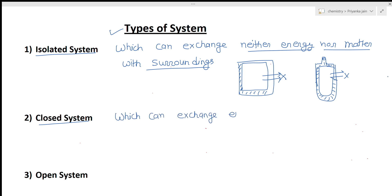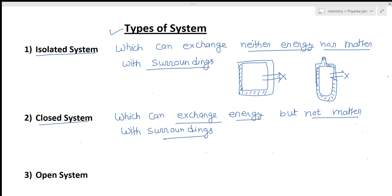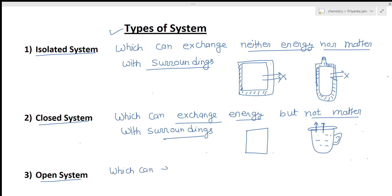The second type of system is called a closed system — one which can exchange energy but not matter with its surroundings. Suppose we take a cup of tea and place a lid on it. Now this cup of tea can exchange heat but cannot exchange matter. Such type of systems are called closed systems.